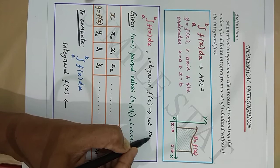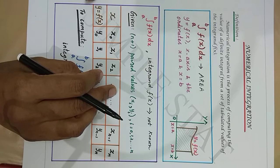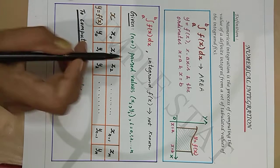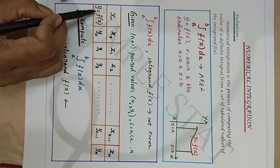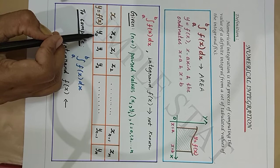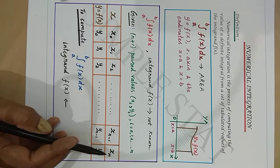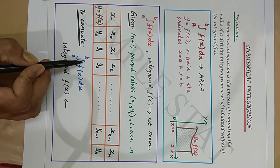When f(x) is known only at certain points, we are provided only with a set of n plus 1 paired values (xi, yi) where i equals 0, 1 to n. This can be tabulated: when x takes the value x naught, y value is y naught; when x is x1, y is y1, and so on to xn and yn. It's required to compute the definite integral a to b of f(x) dx.